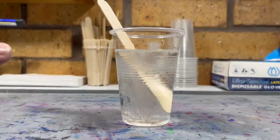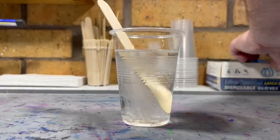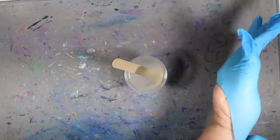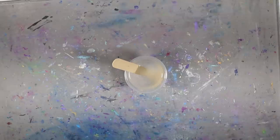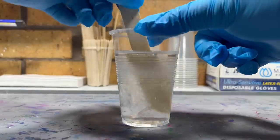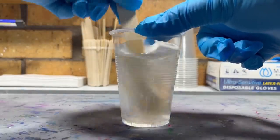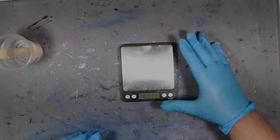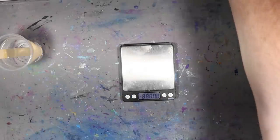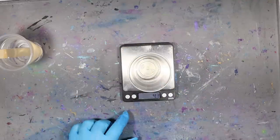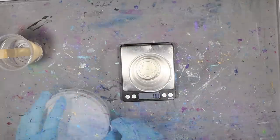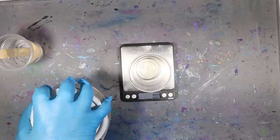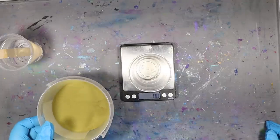I nearly forgot to put my gloves on. Now we had about 280 grams of resin, so that means I need 140 grams of metal powder. Pretty cool.